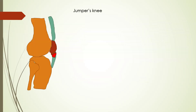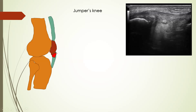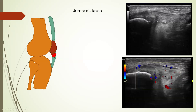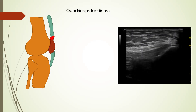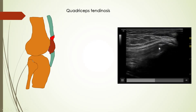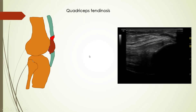Next is jumper's knee, which is focal tendinosis of the proximal patellar tendon. It is seen in athletes involved in jumping activities. Here we can see the proximal patellar tendon is thickened and hypoechoic with presence of vascularity. Similarly, quadriceps tendinosis is inflammation of the quadriceps attachment over the patella, where we can see a hypoechoic tendon with or without presence of calcific foci.